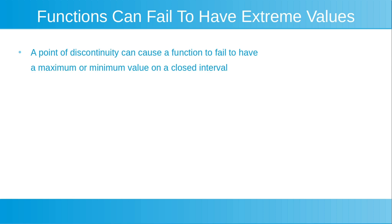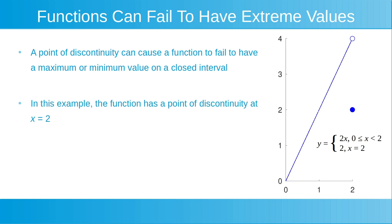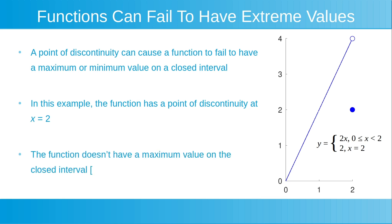A point of discontinuity can cause a function to fail to have a maximum or minimum value on a closed interval. Shown to the right is a plot of the function y is equal to 2x for x greater than or equal to 0 and x less than 2, and y is equal to 2 for x is equal to 2, plotted on the closed interval from x is equal to 0 to x is equal to 2. In this example, the function has a point of discontinuity at x is equal to 2. The function does not have a maximum value on this closed interval, but it does have an absolute minimum value of 0 at the point where x is equal to 0.